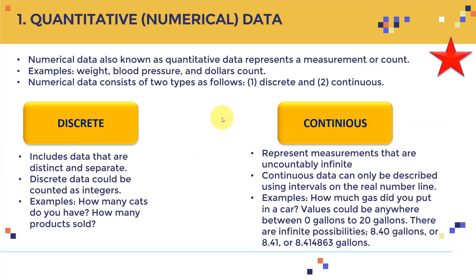Let's dig a little deeper into each one. Quantitative or numerical data represents a measurement or count — weight, blood pressure, and dollar count — and it consists of discrete and continuous subtypes. Discrete data includes data that are distinct and separable, and they can be counted as integers. For example, how many cats do you have, or how many products have you sold? These are discrete numerical values.